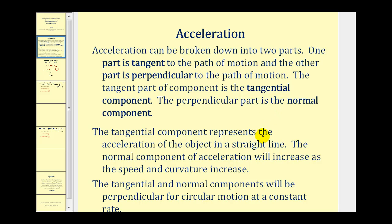The tangential component represents the acceleration of the object in a straight line, while the normal component of acceleration will increase as the speed and curvature increase. The tangential and normal components of acceleration will be perpendicular for circular motion at a constant rate.